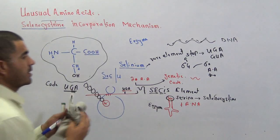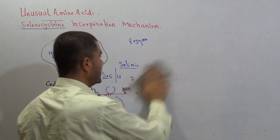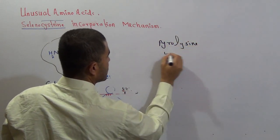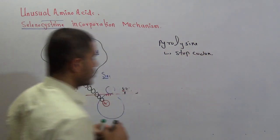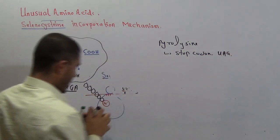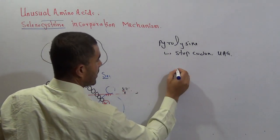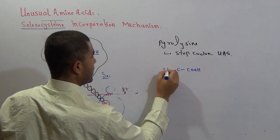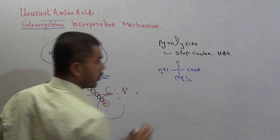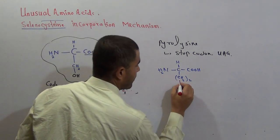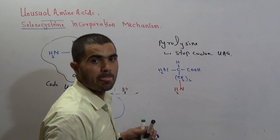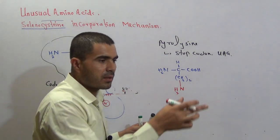Pyrrolysine also uses a stop codon, but if for selenocysteine it is UGA, for pyrrolysine it will be UAG. The structure of pyrrolysine: you have COOH, NH2, hydrogen, and four CH2 groups, then one nitrogen and two hydrogens. When there is one hydrogen and two hydrogens at that end, this is called lysine amino acid, and lysine is among the 20 standard amino acids.